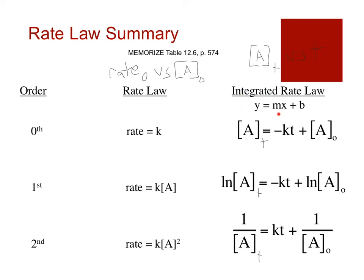These are in y = mx + b format because experimentally, the only way to figure out which order we have is to graph them. For a zero order rate law, we graph concentration versus time. For a first order rate law, it's natural log of concentration versus time. For second order, it's inverse concentration over time. One of them will give us a straight line, and whichever one gives a straight line is the correct relationship. The slope is the rate constant. Rate constants are always positive, but in zero and first order the slope is negative KT, while second order is positive KT.